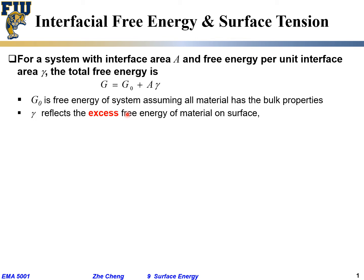A is our total surface area. Gamma is what we call the excess free energy — the excess free energy of the material on the surface per unit surface area. It has a unit of joules per meter squared; it is a surface energy term. Excess with respect to what? Excess with respect to the bulk — not compared to vacuum, but excess with respect to if the atom were within the bulk.